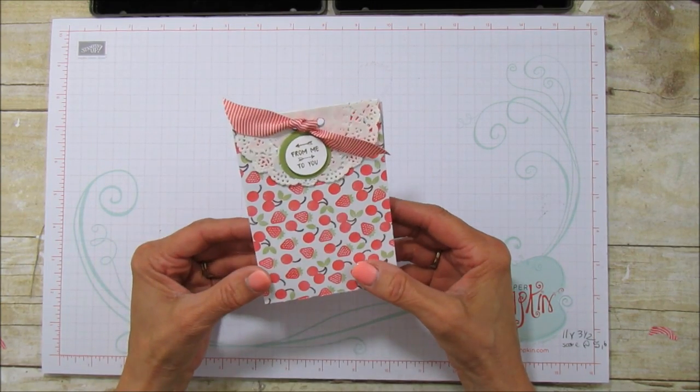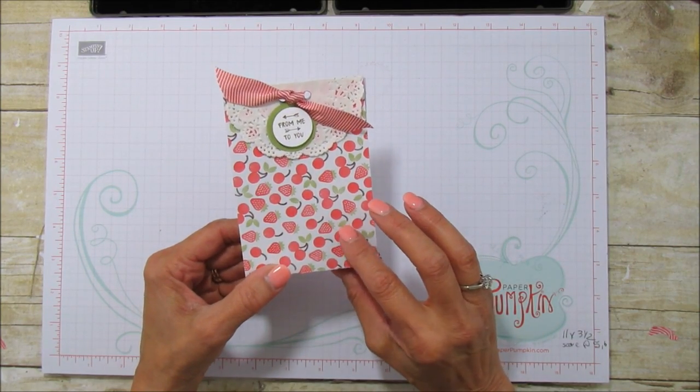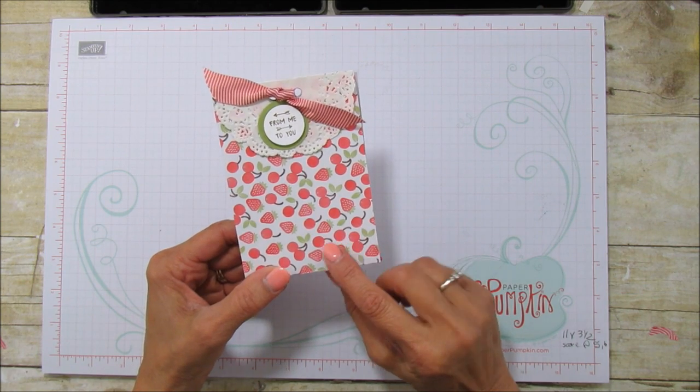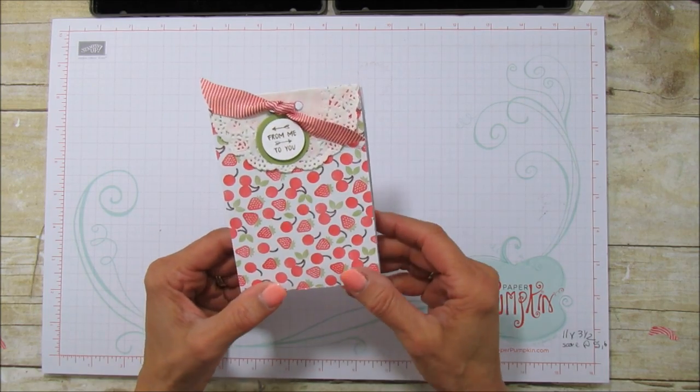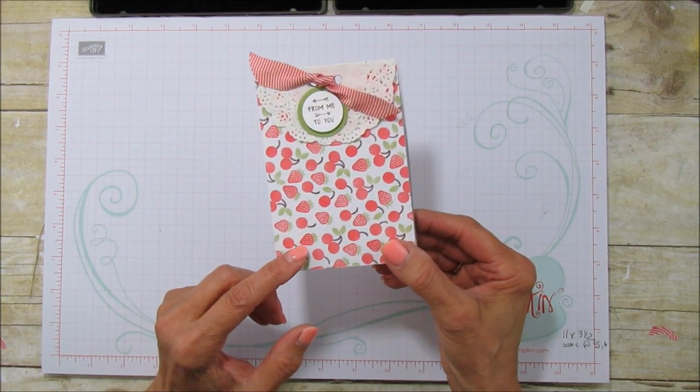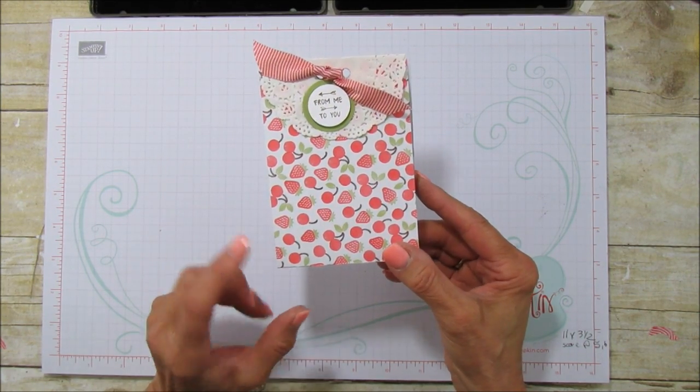So this is what I'm sharing and it's going to be really quick and easy and this paper is the Tasty Treats Designer Series paper and it also is retiring and this is one of the designer's specialty sheets that's in there. There's two specialty sheets and this is one of them.